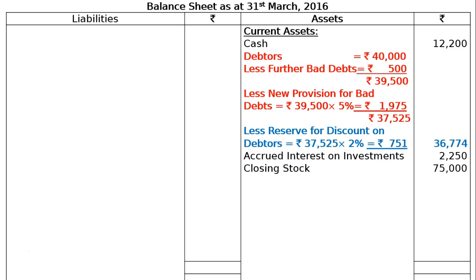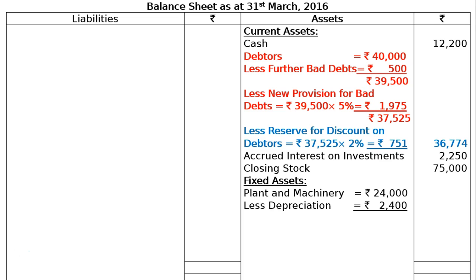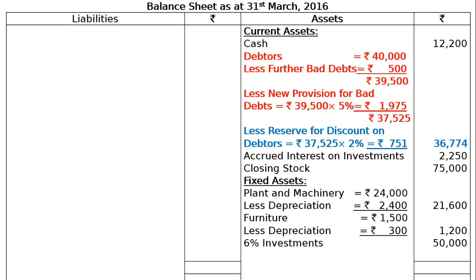Closing stock from the adjustment is Rs 75,000. Under fixed assets: plant and machinery Rs 24,000 less 10% depreciation Rs 2,400 = Rs 21,600 in the final column. Furniture Rs 1,500 less 20% depreciation Rs 300 = Rs 1,200 in the final column. Investments: 6% investments Rs 50,000. Patents (a production formula) Rs 4,800, which is also an asset.